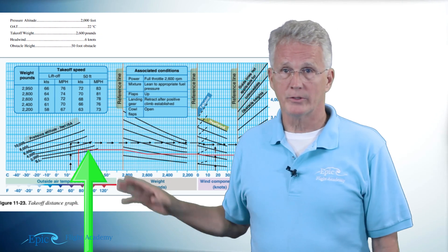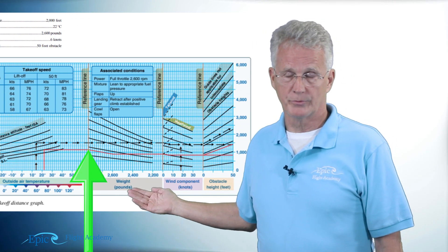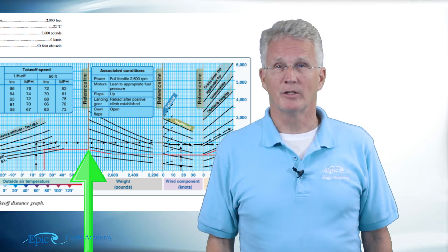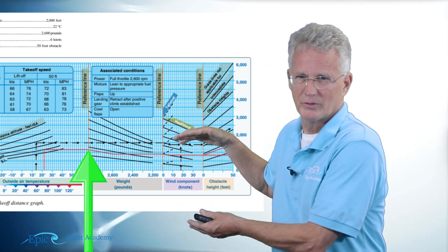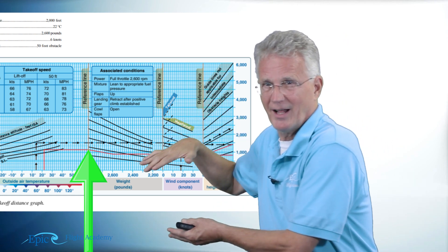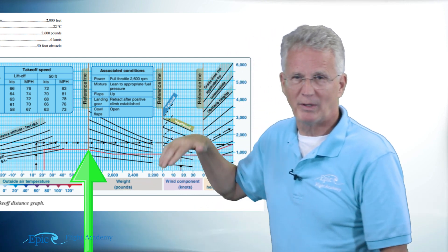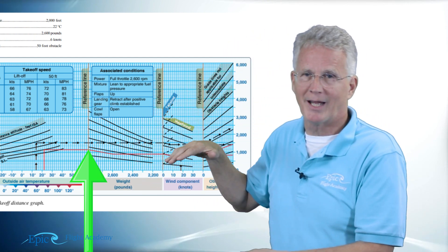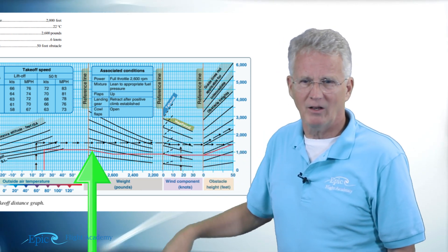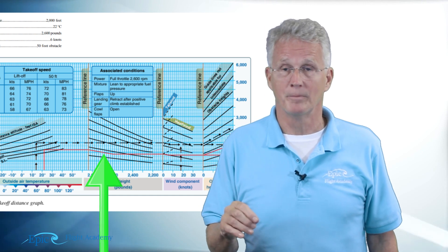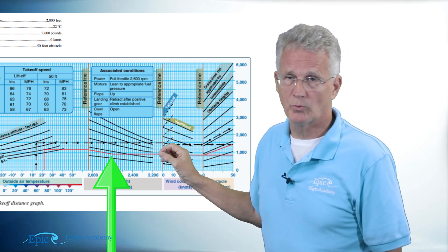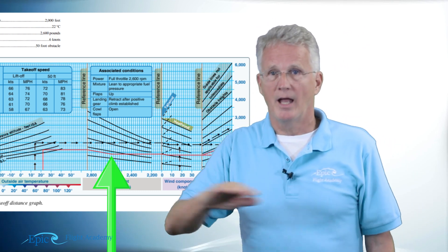When I hit the next chart notice on the bottom it says weight in pounds. So now I'm going to follow the slope. I'm going to follow the slope and I'm going to try to carefully eyeball this. Notice that these black sloping lines are not parallel. Where those black lines are steep my slope will be steep. Where those black lines are shallow my slope will be shallow. Notice on our example my red line is kind of following that slope down to my weight of 2,600 pounds.